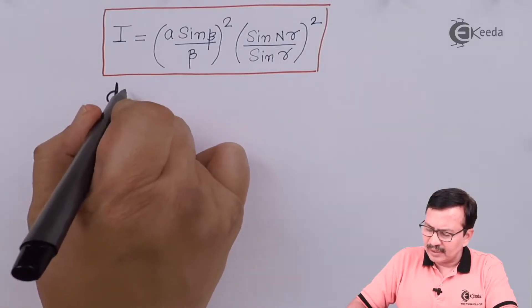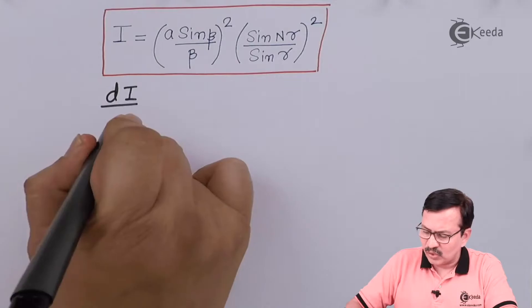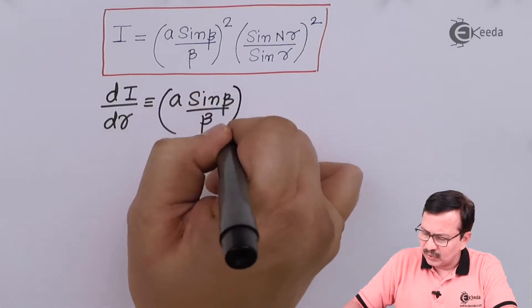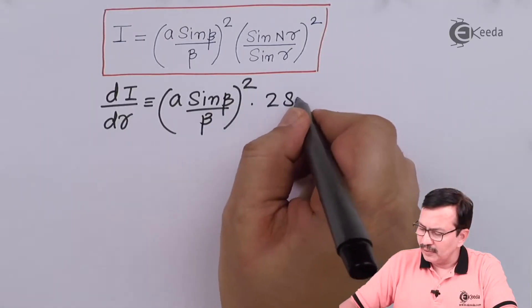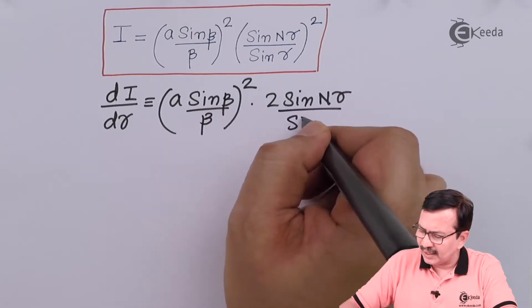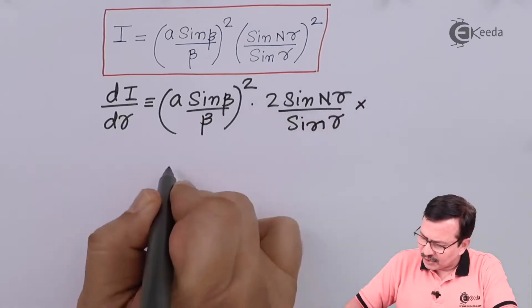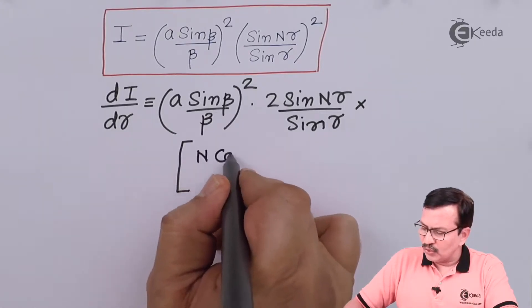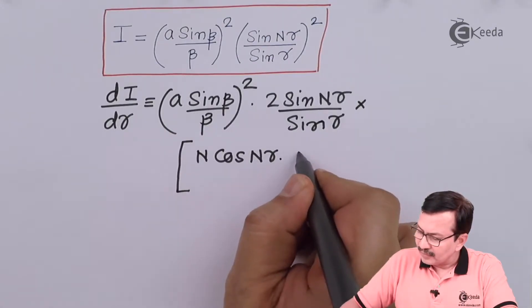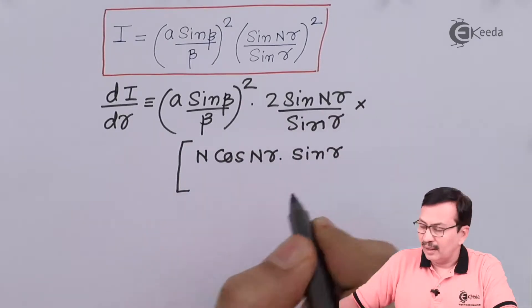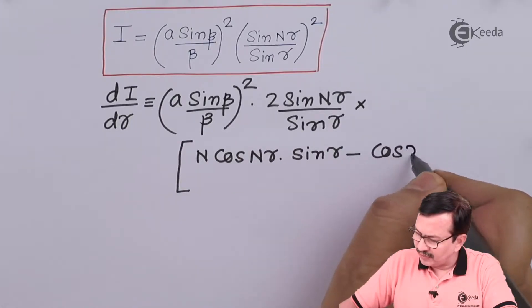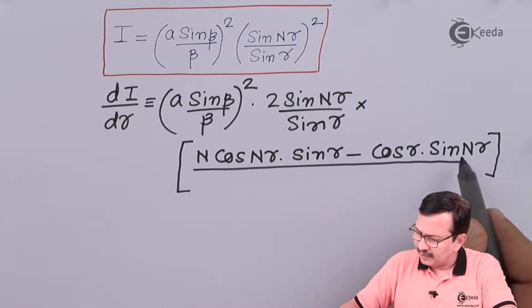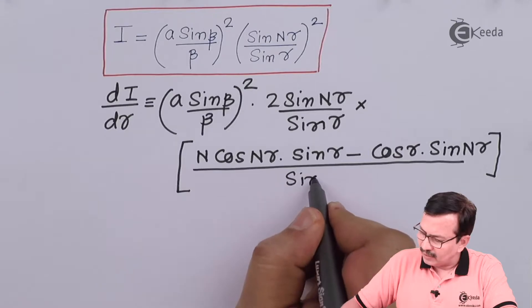So how do we find out the intensity of the secondary maximas? We take dI/dγ, which is equal to A into sin(β)/β the whole square, into 2·sin(nγ)/sin(γ), multiplied by n·cos(nγ)·sin(γ) minus cos(γ)·sin(nγ), this entire thing divided by sin²(γ).